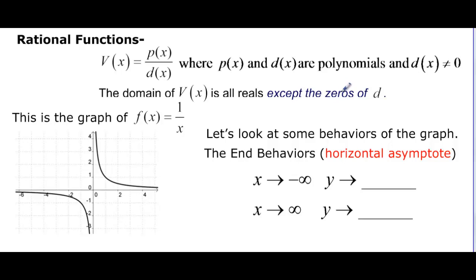Because remember we can't divide by zero or we have something undefined. So the domain of V(x) then is going to be all reals except for those values that make D(x) zero, or the zeros of D(x). So we want to look at a graph and see how this applies and what behaviors happen in these graphs.